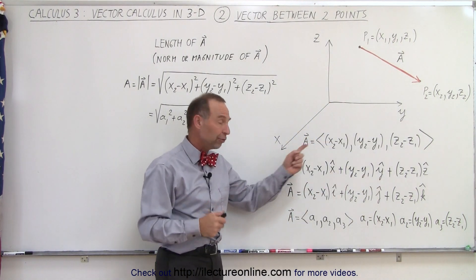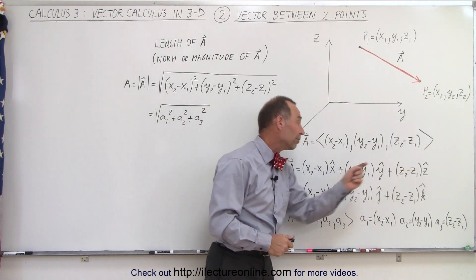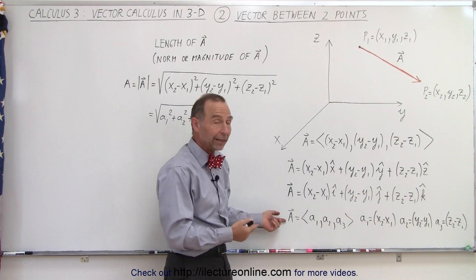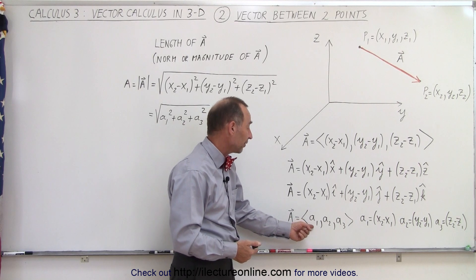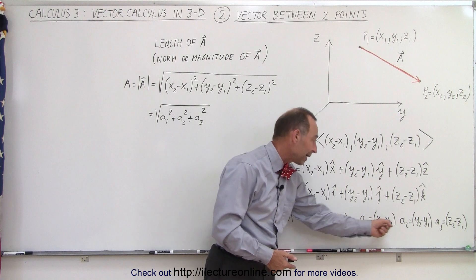Now instead of writing it in this format, you could write it like this with the x, y, and z unit vectors, or with the i, j, and k unit vectors, or essentially you can again write it as the vector a is equal to the three components of the vector a1, a2, and a3, where a1, a2, and a3 are defined right here.